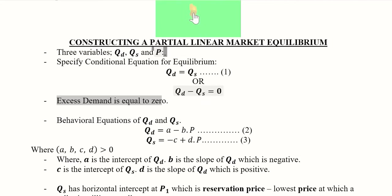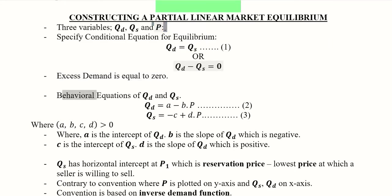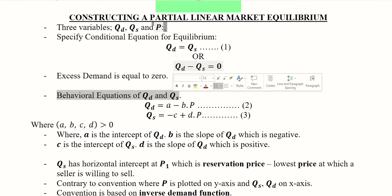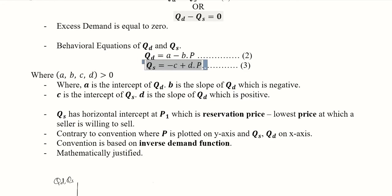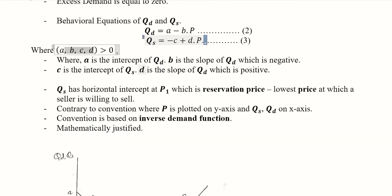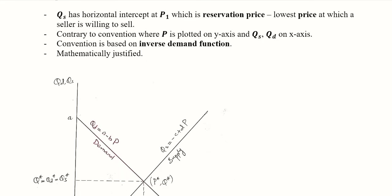The demand is equal to the supply. The behavioral equations of the two are also present — this is the behavioral equation of quantity demanded and this is the behavioral equation of the supply function. We know that a, b, c, and d are all parameters considered to be positive. A is the intercept of the demand function, c is the intercept of the supply function, b is the slope of the demand function, and d is the slope of the supply function.